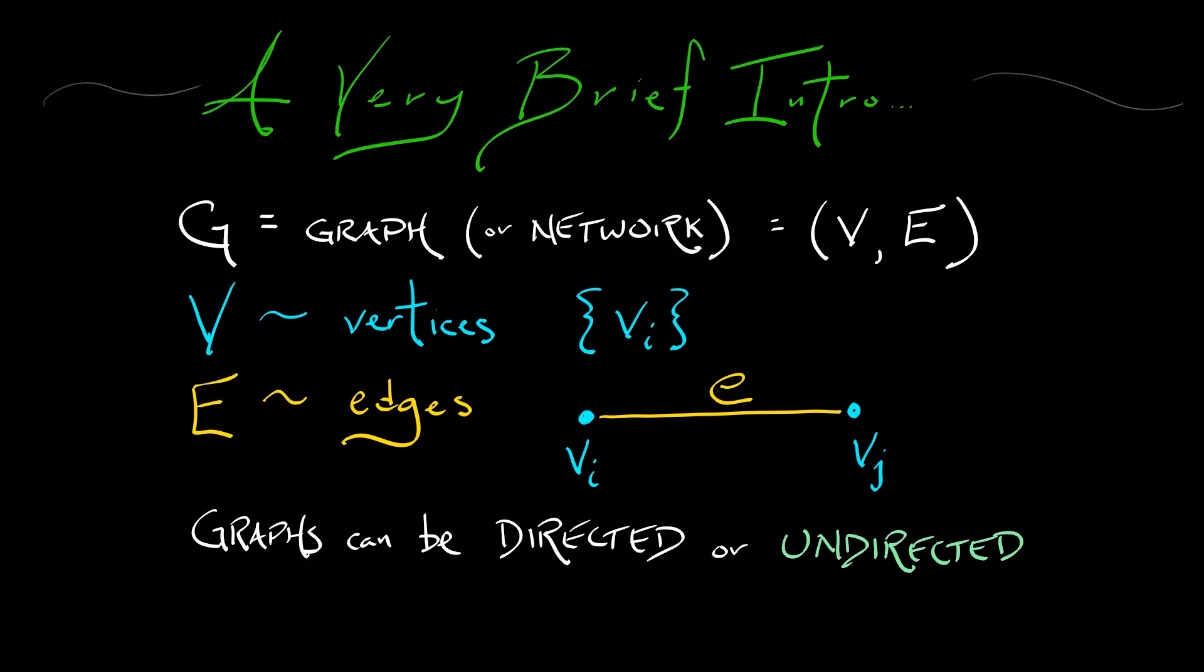Now, we're going to work with something called simple graphs. Simple graphs have no self-loops. That means you can't have an edge from a vertex to itself, and you don't have multi-edges. You don't have multiple edges between the same two vertices. So we're going to keep things simple.